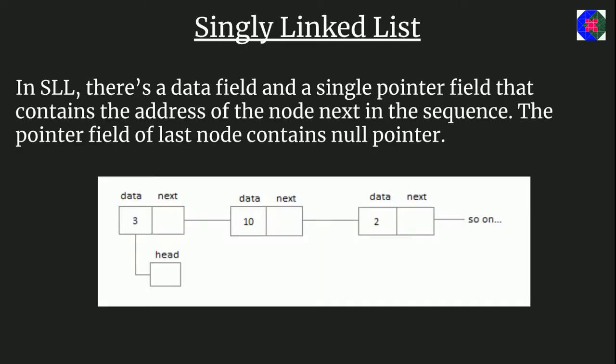In a singly linked list, there is a data field and a single pointer field that contains the address of the next node in the sequence. The pointer field of the last node contains a null pointer, as we already know from the definition of linked list.